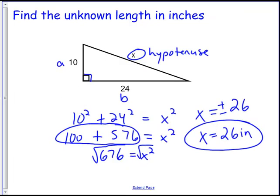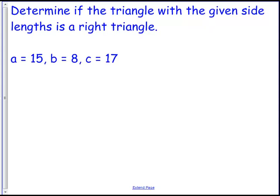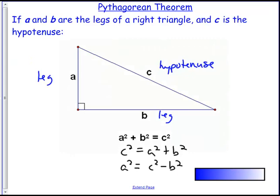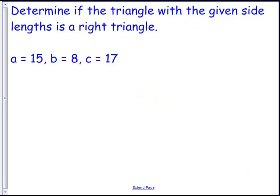One other way that we might approach these problems is I might ask you, does the triangle with the given side lengths form a right triangle? We don't know the angle measures. We don't know anything like that, but we just want to see, okay, if I had a triangle that had these side lengths, would it be a right triangle? What we need to understand is the Pythagorean Theorem works for all right triangles. And so in order for this triangle to be a right triangle, the Pythagorean Theorem would have to work. So all I'm going to do is use a little substitution. What I want to see is, does a² + b² = c²? If it does, we have a right triangle. If it doesn't, we don't.